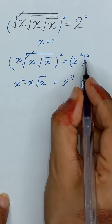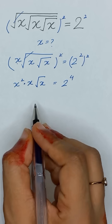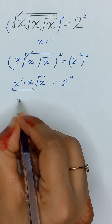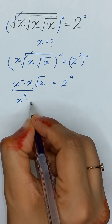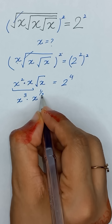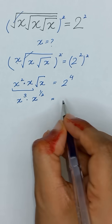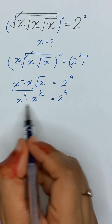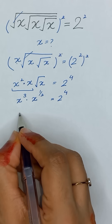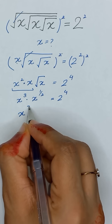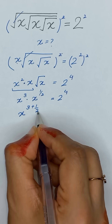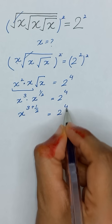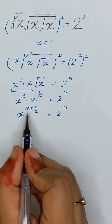As we know that a to the power m, and its whole power n, is equal to a to the power m times n. Now it will become x to the power 3, times x to the power 1 divided by 2, is equal to 2 to the power 4. Here the bases are the same, so we can add the powers.